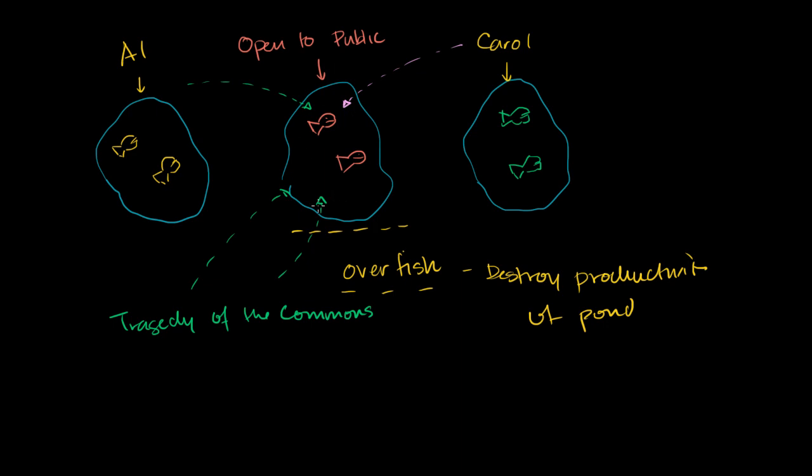And the classic example of tragedy of the commons, where the example was first given, was common grazing land. Same exact idea. If this was private grazing land over here, where I can keep my cows and my sheep, and this is private grazing land over here, where someone else has their cow and sheep, but this over here is literally a commons, where anyone can graze their cow and sheep, then,